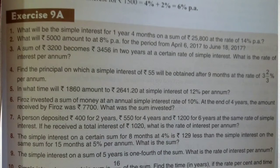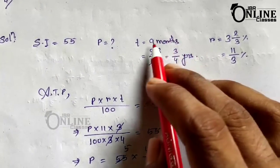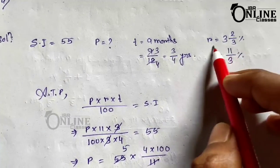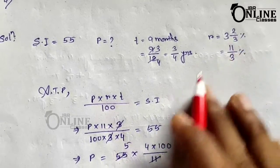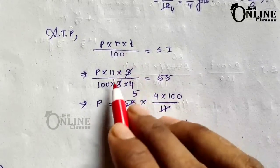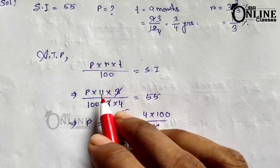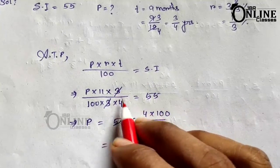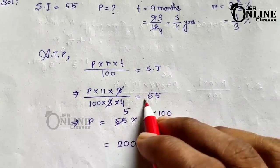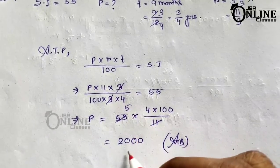Sum number 4: Find the principal on which a simple interest of rupees 55 will be obtained after 9 months at the rate of 3 and 2/3% per annum. Here SI equals 55, T equals 9 months which is 3/4 year, and rate equals 3 and 2/3% which becomes 11/3%. Using PRT by 100 equals SI: P into 11/3 into 3/4 divided by 100 equals 55. By calculation, P equals 55 into 4 into 100 by 11, which equals 2000.